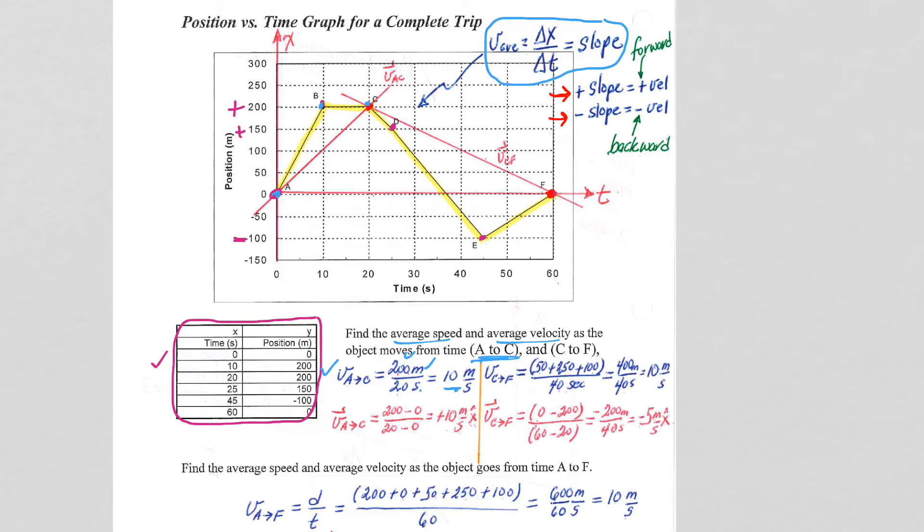Well, the average velocity then is the slope of our secant line, final minus initial for position, right? Delta X, X final minus X initial, T final minus T initial.